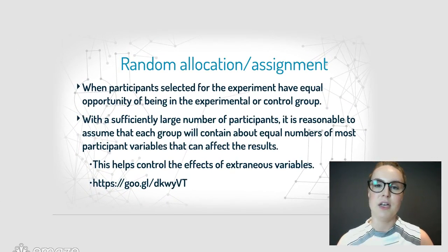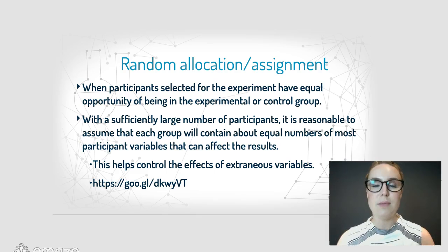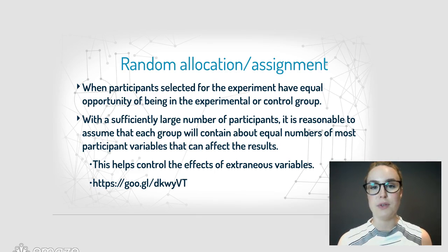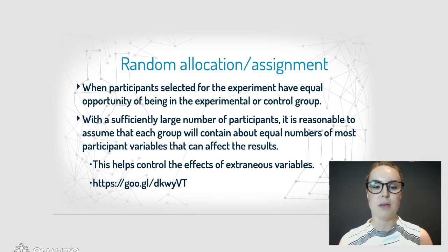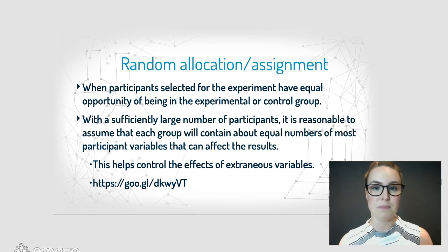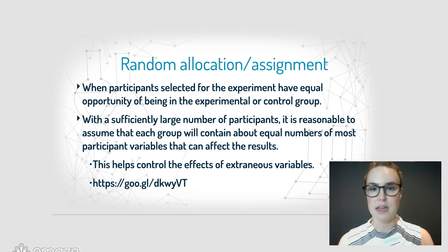Random allocation and assignment is really important. When participants are selected for the experiment, they must all have equal opportunity to be in either the experimental or the control group — they don't get to choose, and neither does the researcher; it has to be random. With a sufficiently large number of participants, you can reasonably assume equal representation from the population, which helps control the effects of extraneous variables.